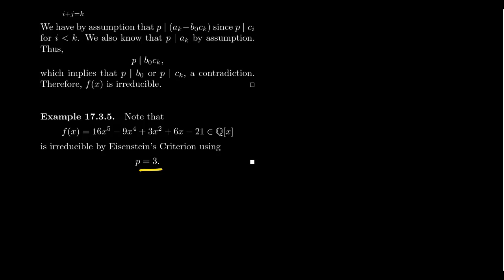So if we look at the rational prime 3, notice what happens here. The coefficient of x⁵, 16, is not divisible by 3. But the other coefficients, negative 9, 3, 6, negative 21, they're all divisible by 3. And then the last number, negative 21, that's not divisible by 9. So by Eisenstein's criterion, we have that this polynomial is in fact irreducible.